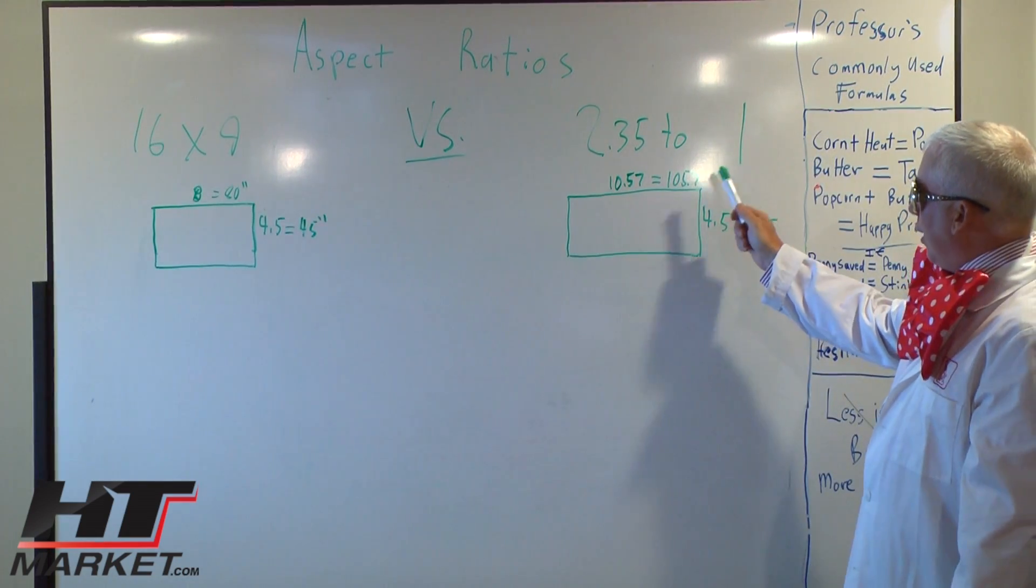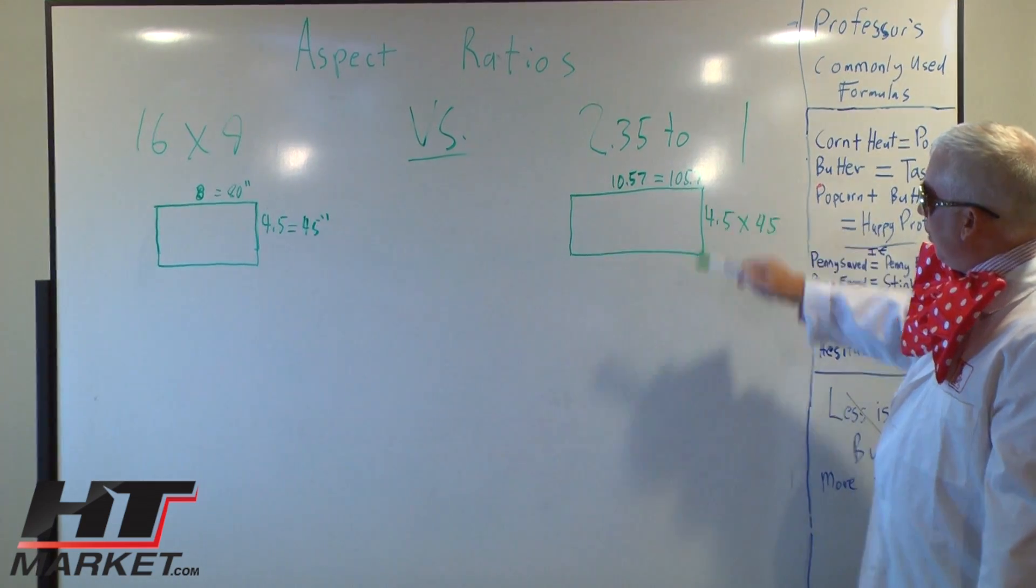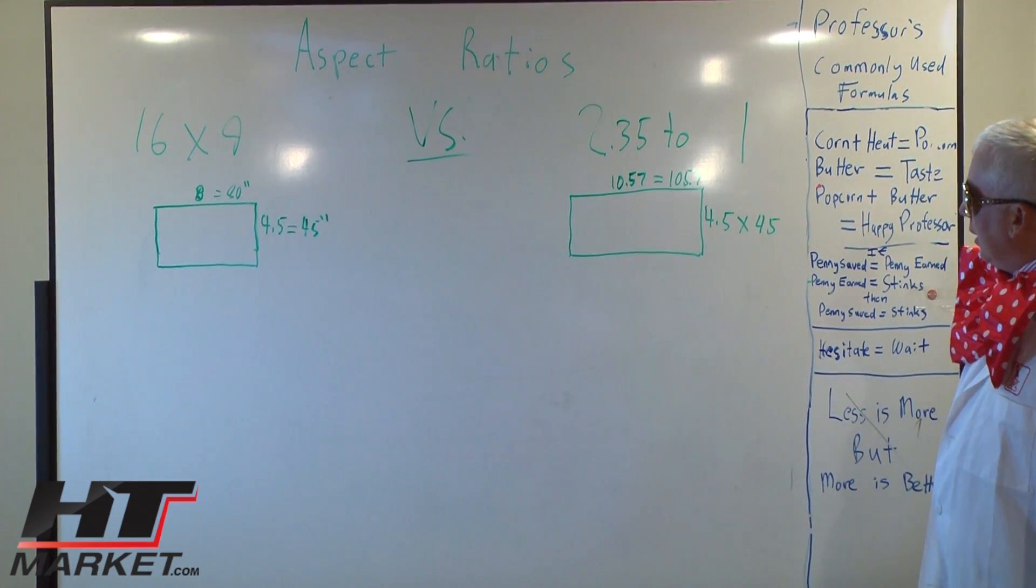There are some at 2.4 to 1, but using your zoom lens you could basically use a 2.35 to 1 aspect ratio.